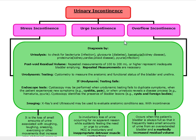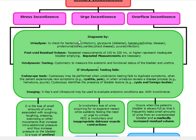To first diagnose these patients, we're going to do a urinalysis. On our urinalysis, we're going to check for infection by looking for bacteria in the urine, check for glucose in case they have diabetes, check for blood in case they have kidney disease, check for protein which can indicate kidney, cardiac, or blood disease, and look for pyuria which can indicate an underlying infection as well.